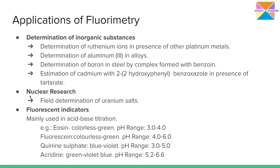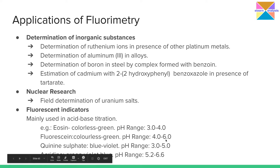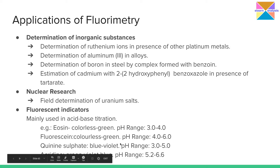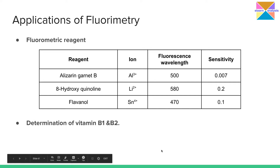Another application is the use of fluorescent indicators, mainly in acid-base titrations. The intensity and color of these fluorescent compounds depend on the pH of the solution. Examples include: eosin, which changes from colorless to green in the pH range 3 to 4; fluorescein, which changes from colorless to green in the pH range 4 to 6; quinine sulfate, which changes from blue to violet in the pH range 3 to 5; and acridine, which shows a color change from green to oil blue in the pH range 5.2 to 6.6.